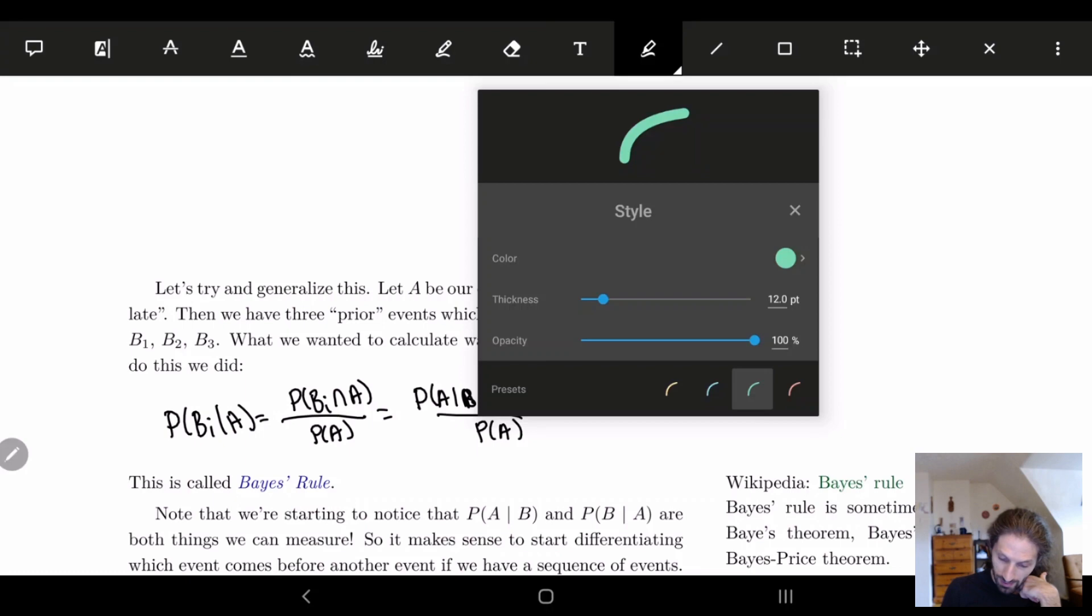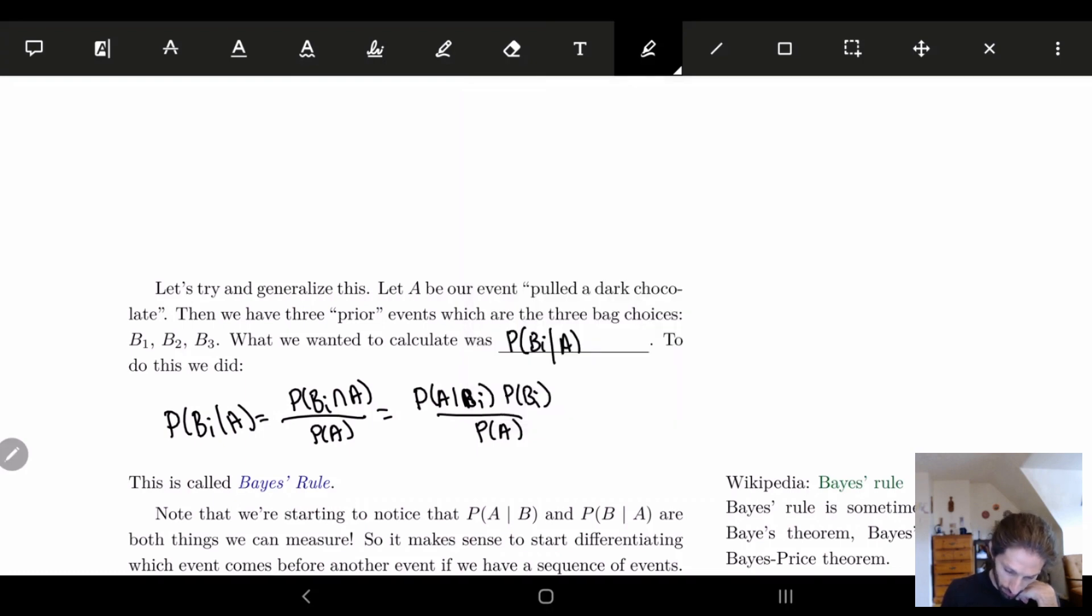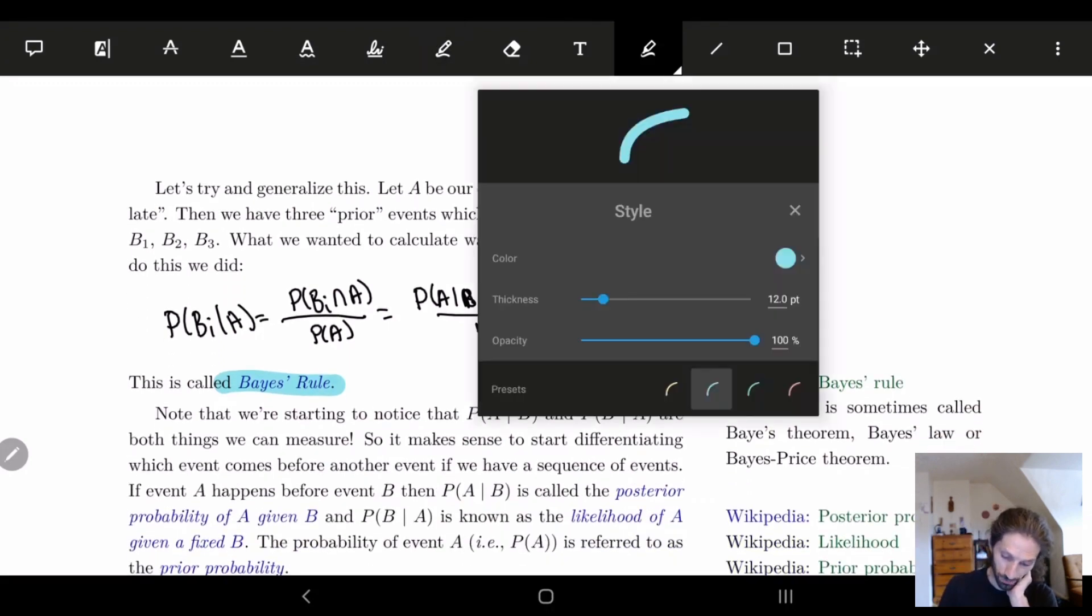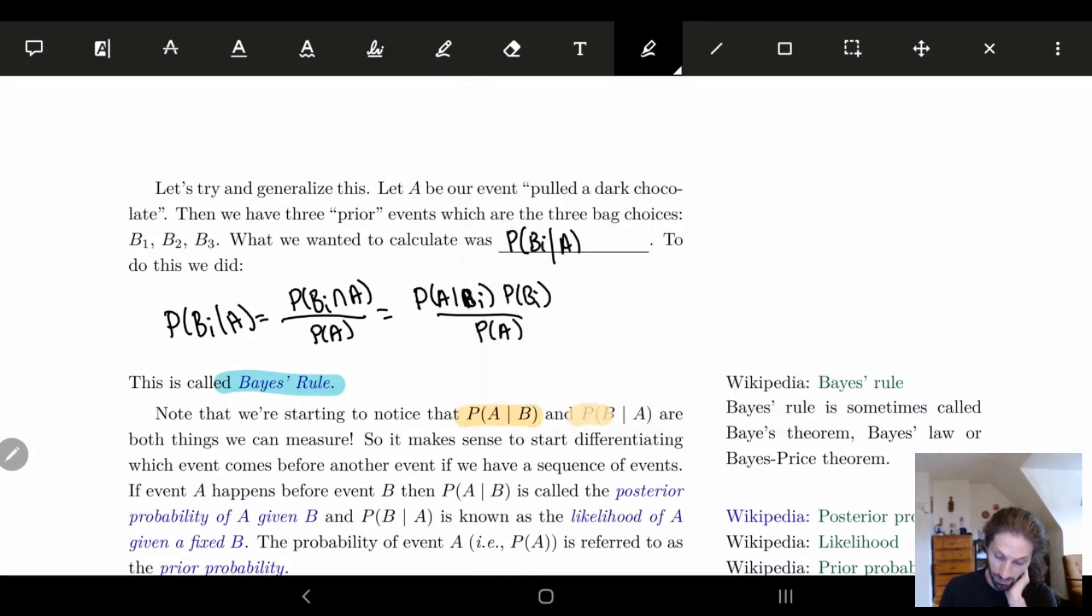Bayes was a probabilist who basically looked at this. So you can now start noticing that we can actually measure two different things: we can measure P of A given B and P of B given A. That means things are going to get really complicated if we don't start saying which one was before which one came after. We have to have some sequence of things.